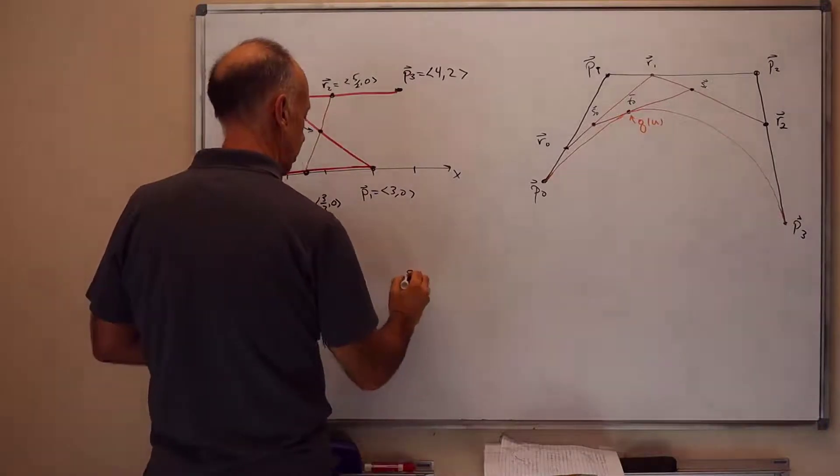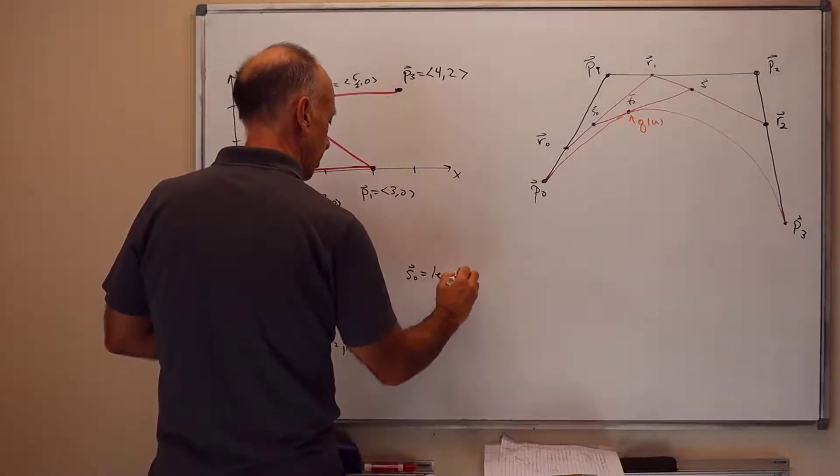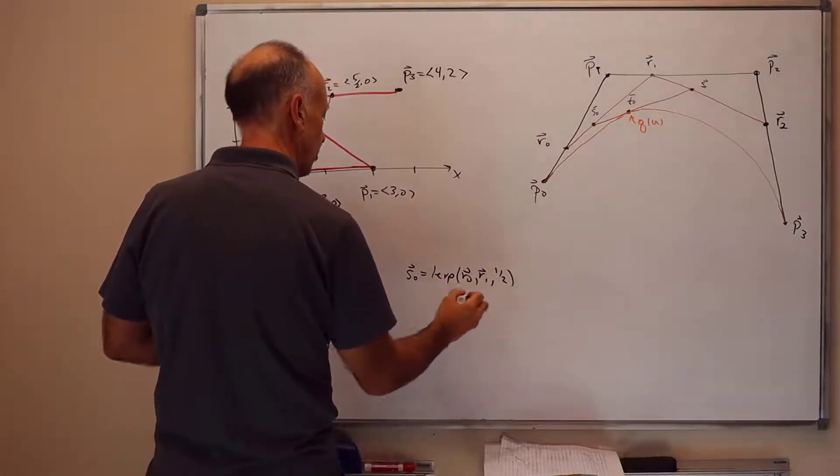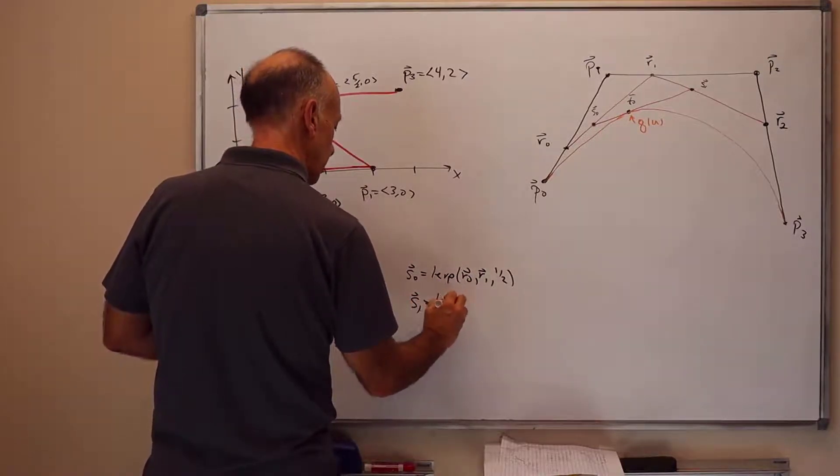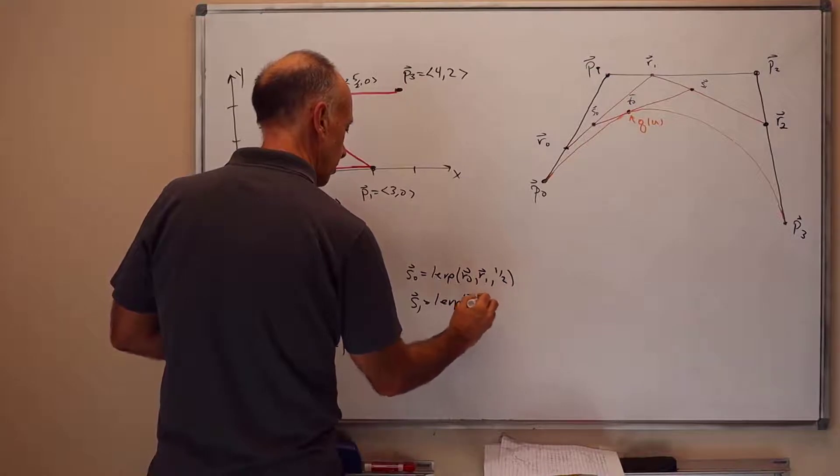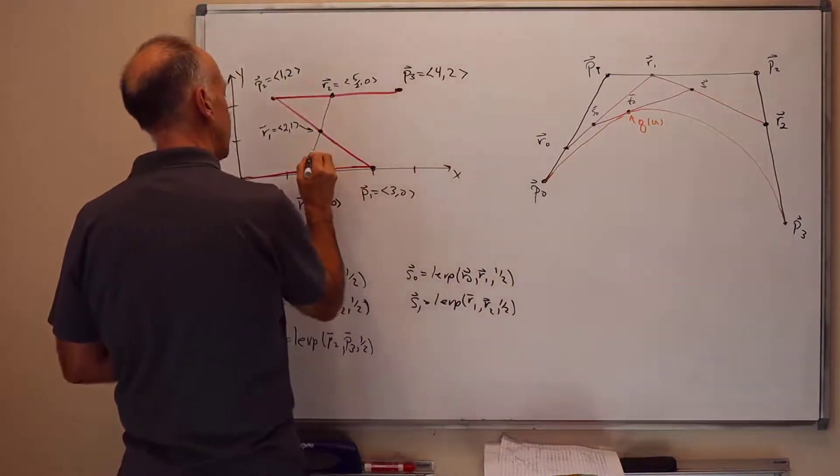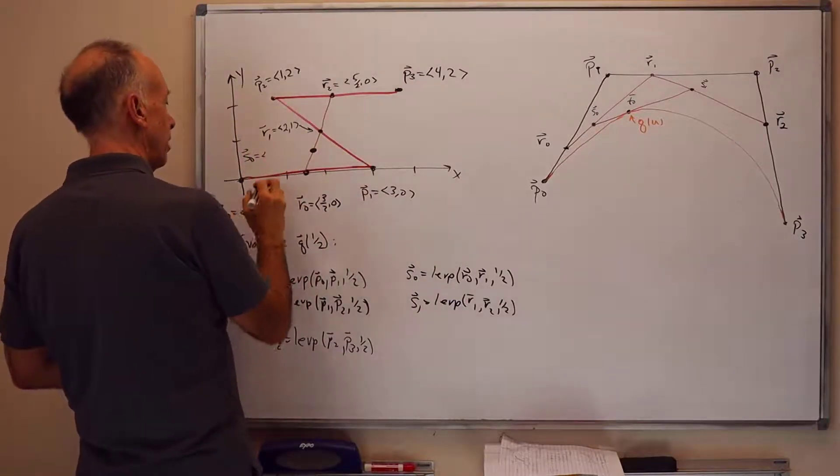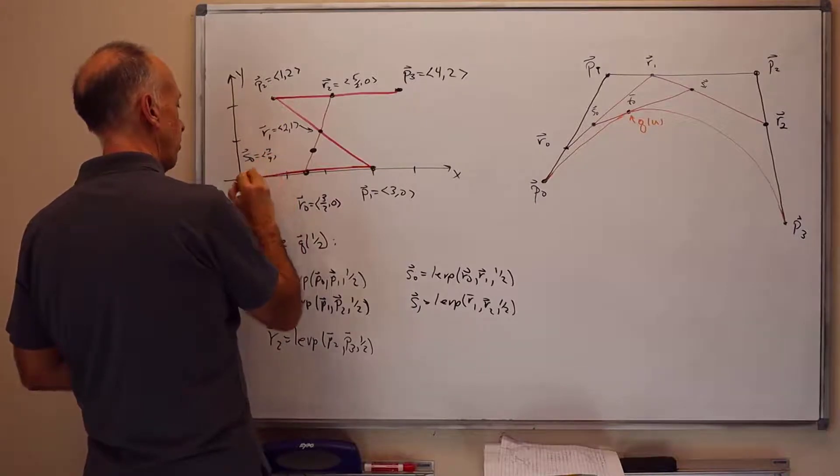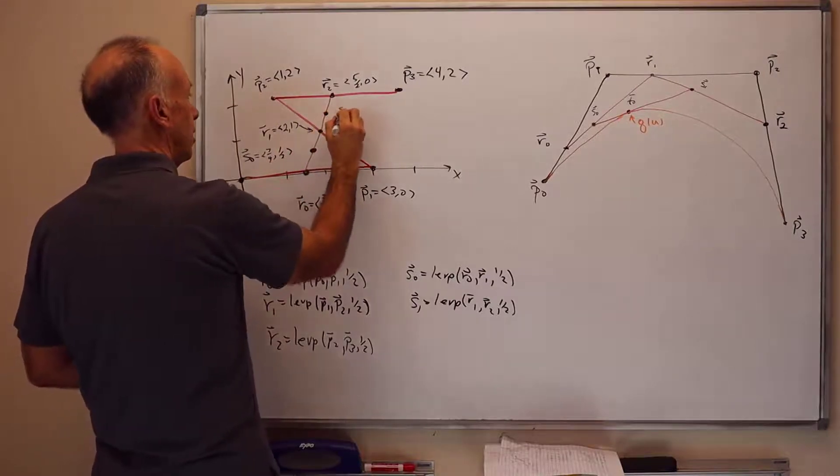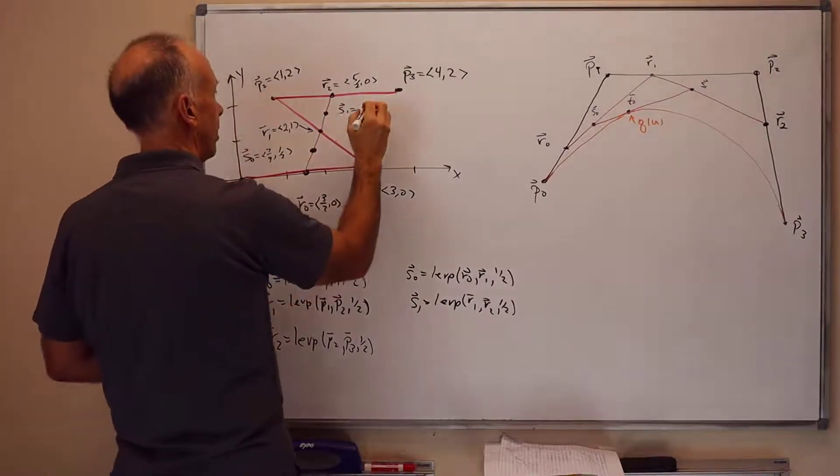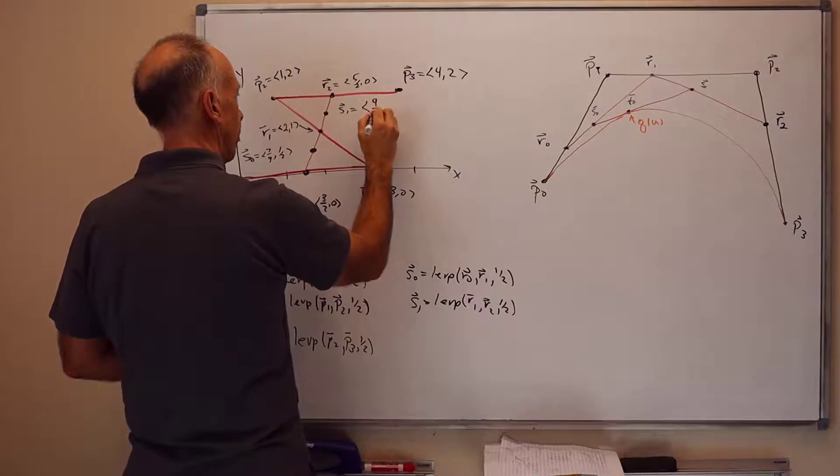And we're going to set S0 to be the midpoint of R0 and R1. And S1 is lerp R1, R2, 1 half. So S0 sits here midway between R0 and R1, and it's equal to (7/4, 1/2). And S1 sits here midway between R1 and R2, and it's equal to (9/4, 3/2).